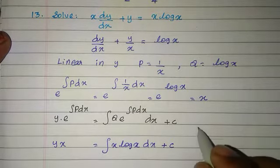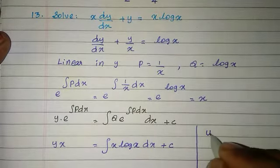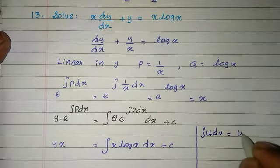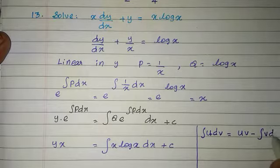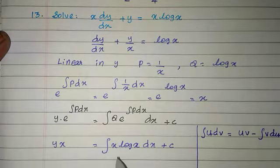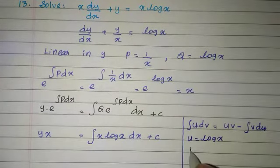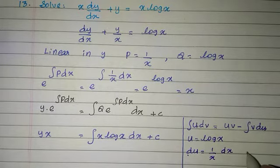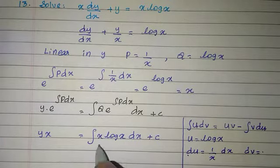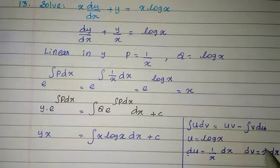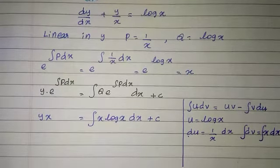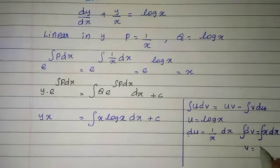We use the integral u dv formula: integral u dv equal to uv minus integral v du. We take u equal to log x (logarithmic term), then du equal to 1/x into dx. And dv equal to x into dx. Integrating dv, we get v equal to x square by 2.